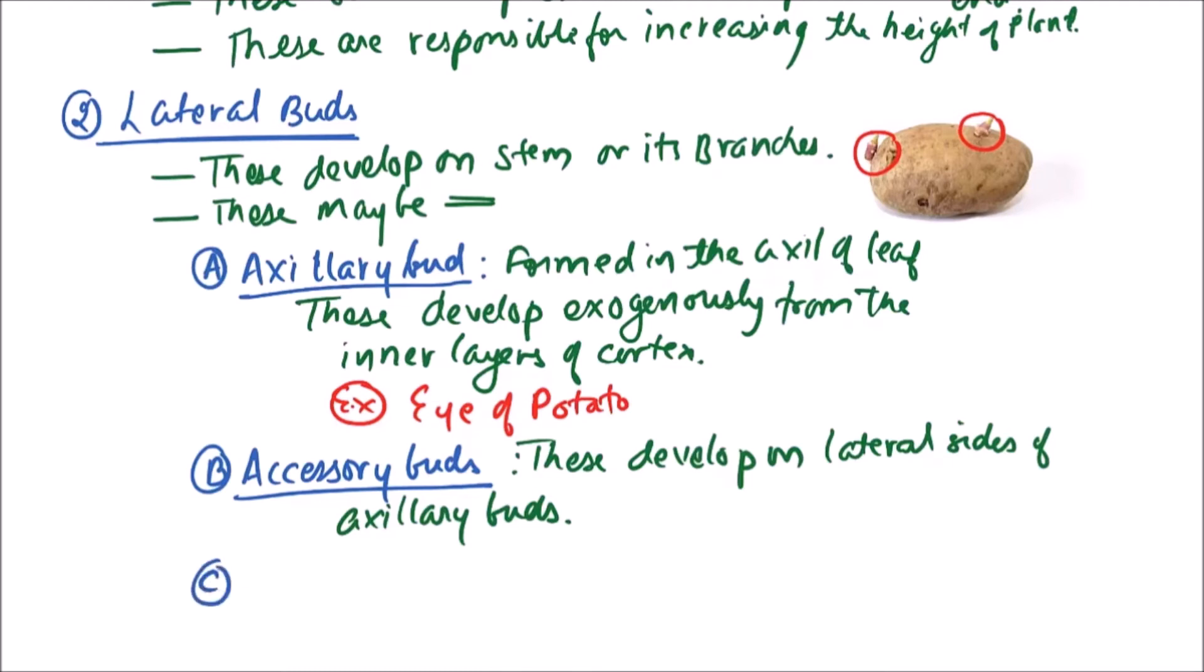Third one is extra-axillary buds. These buds are formed on nodes outside the leaf bases.